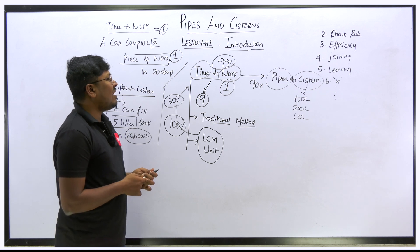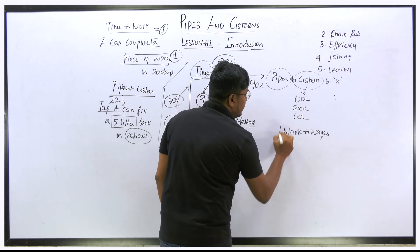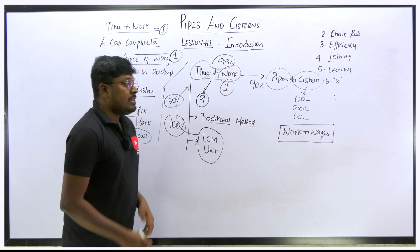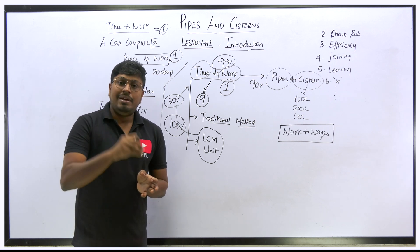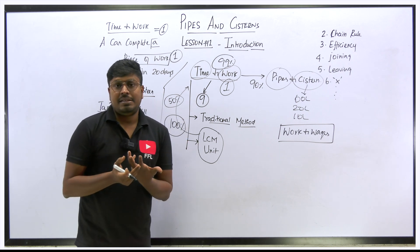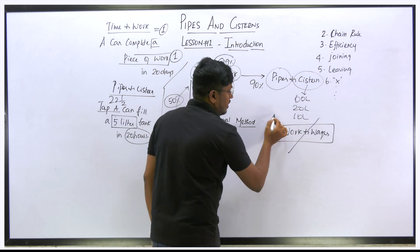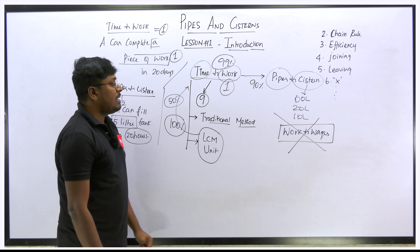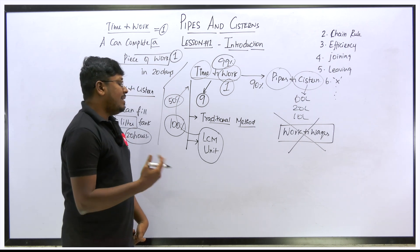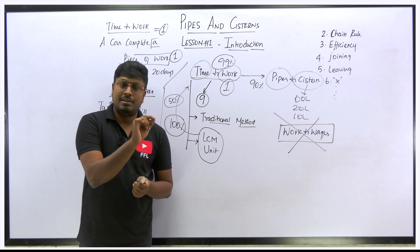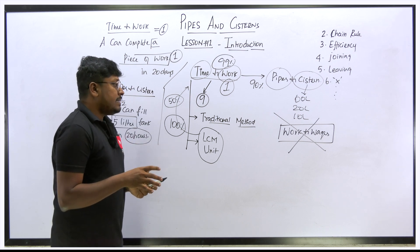One more thing: the Work and Wages concept from Time and Work will not appear in Pipes and Cisterns. In Time and Work, you may see questions where A, B, and C work for a certain number of days and then you calculate their wages based on work ratio. But when you take Pipes and Cisterns, this wages concept does not apply. So you don't need to learn or apply the wages concept for Pipes and Cisterns. Mostly everything else will be the same.